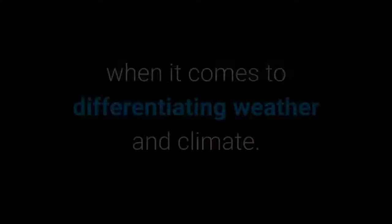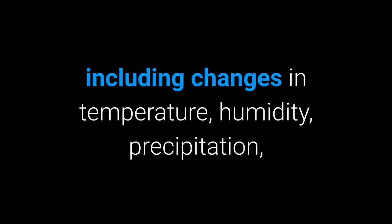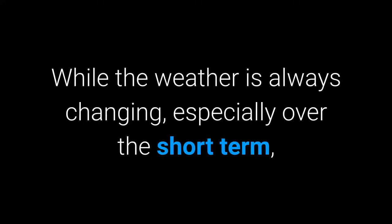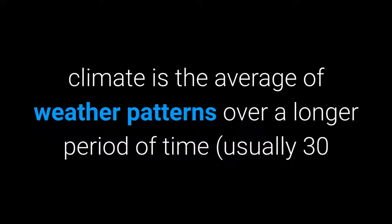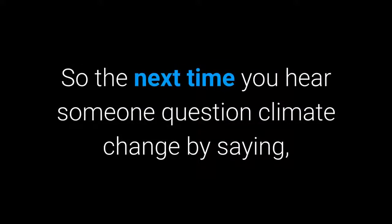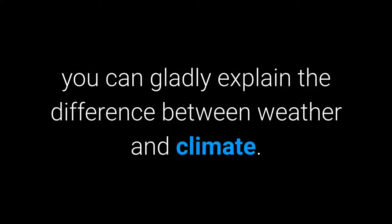4. Weather vs. Climate. It's all about timing when it comes to differentiating weather and climate. Weather refers to atmospheric conditions in the short term, including changes in temperature, humidity, precipitation, cloudiness, brightness, wind, and visibility. While the weather is always changing, climate is the average of weather patterns over a longer period of time — 30 or more years. So the next time you hear someone question climate change by saying 'you know it's freezing outside, right,' you can gladly explain the difference between weather and climate.